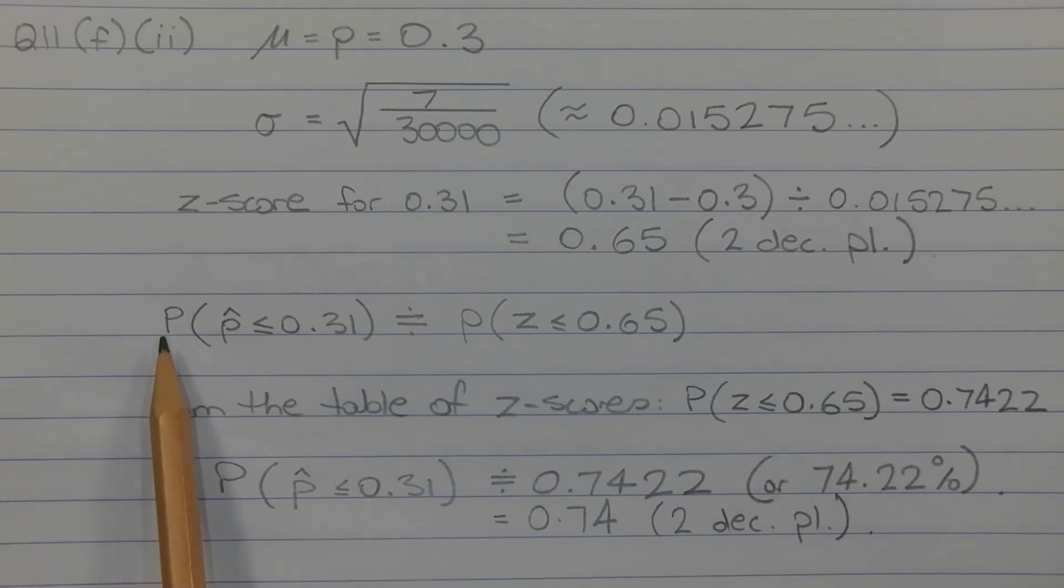Now the probability that the sample proportion P-hat is less than or equal to 0.31 is approximately equal to the probability that the corresponding Z-score is less than or equal to 0.65. And from the table of Z-scores, the probability that Z is less than or equal to 0.65 is equal to 0.7422.